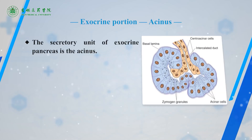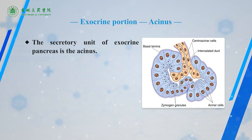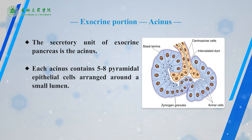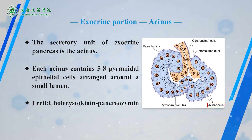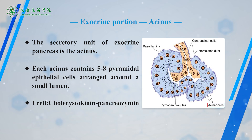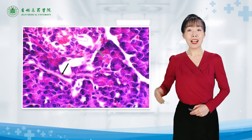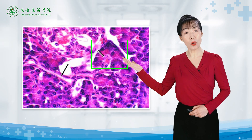The secretory unit of the exocrine pancreas is the serous acinus. Each acinus contains 5 to 8 pyramidal epithelial cells, arranged around a small lumen. Their secretory functions are controlled by cells of the small intestine. The square shows one serous acinus.